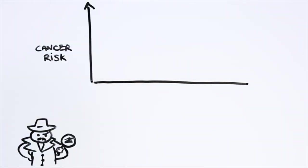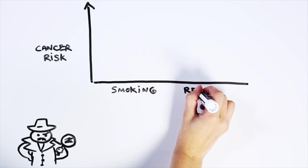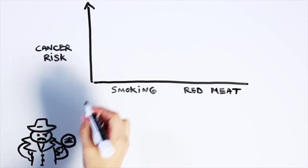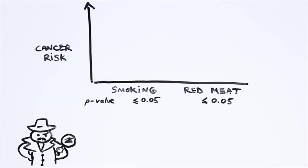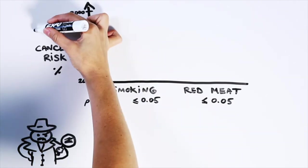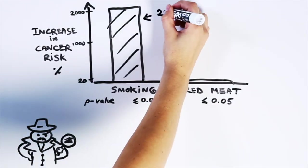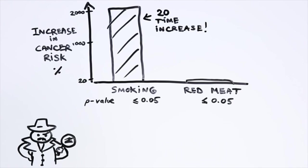Consider cancer risk. Epidemiological work shows that both smoking and processed and red meats have a statistically significant association with increased cancer risk, meaning they both have p-values below 0.05. But while smoking increases your chances of getting cancer by around 20 times or 2,000%, eating red and processed meats increases it by only 20% or 0.2 times. This is extremely low when you consider all the other things you're exposed to that potentially impact your health, especially if the chances of getting cancer aren't high to start with.